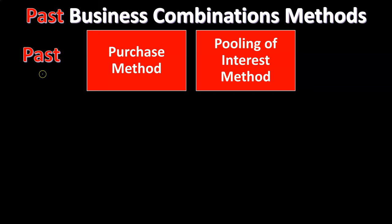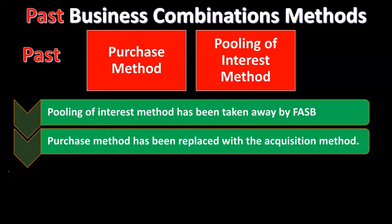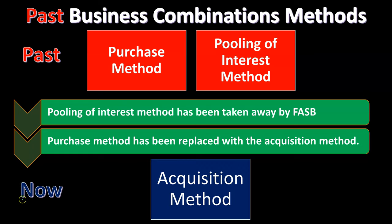In the past, we had combination methods that included the purchase method and the pooling of interest method. Then the pooling of interest method was taken away by FASB — FASB said they're not going to allow the pooling of interest method anymore. Then the purchase method has been replaced with the acquisition method. In essence, what we're currently doing is the purchase method, but we changed the name from the purchase method to the acquisition method.